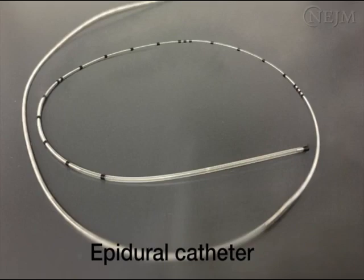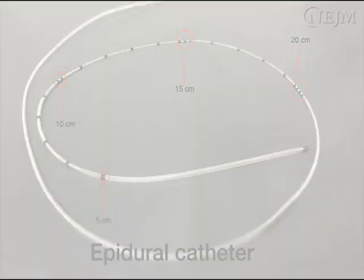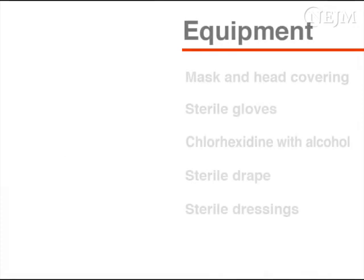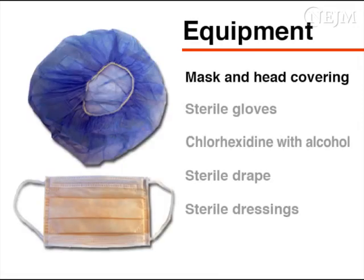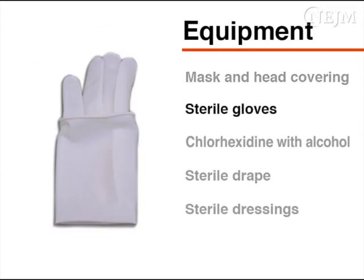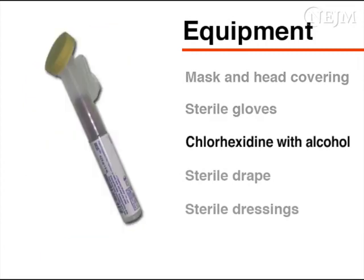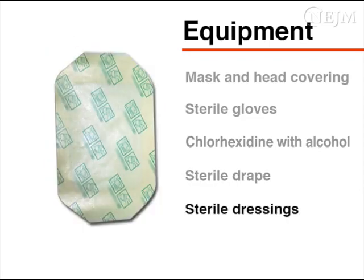The epidural catheter has markings starting 5 centimeters from the tip, with markings at 1-centimeter intervals and specific markings at 5, 10, 15, and 20 centimeters. In addition to the kit contents, each person present at the procedure will need to don a mask and head covering. You will also need sterile gloves, an antiseptic skin cleanser—preferably chlorhexidine with alcohol—a sterile drape, and sterile dressings.